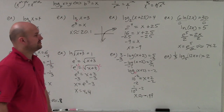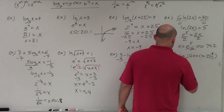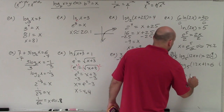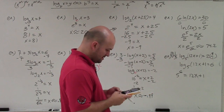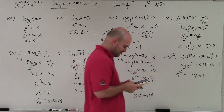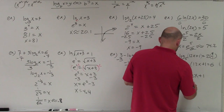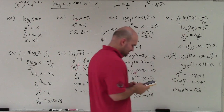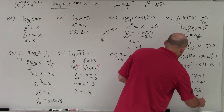In our last example, we use inverse operations: multiply by 3 over 1 (the reciprocal) to isolate the log. So I have log base 5 of 12x plus 1 equals 6. Rewriting in exponential form: 5 to the sixth power equals 12x plus 1. Then subtract 1 and divide by 12. 5 to the sixth power equals 15,625, so 15,624 divided by 12 gives x equals approximately 1302.1.